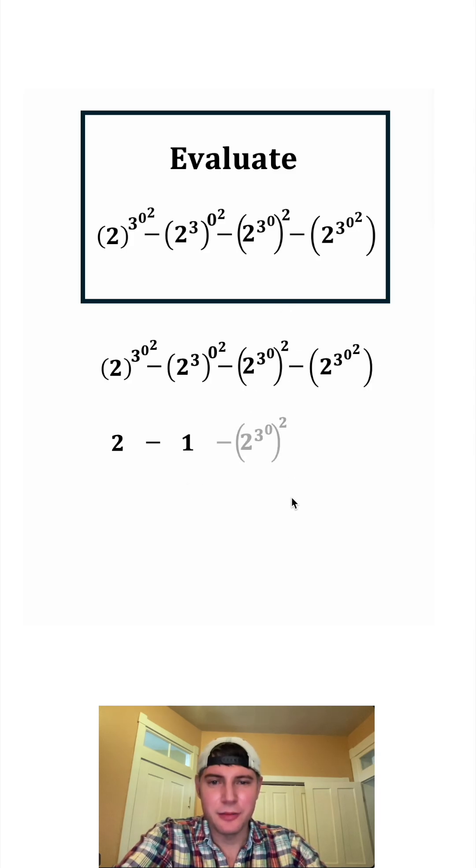And now let's do this term. For this one, we need to do inside the parentheses first. And we need to do the tower first. Three to the zero is equal to one. And then we can do two to the one, which is two. And now we can do the two squared. And that's equal to four. So this whole term was equal to four.